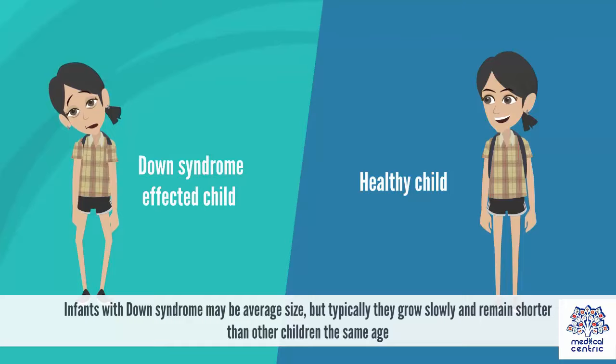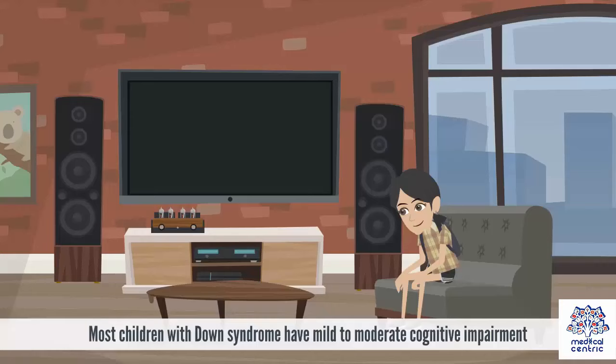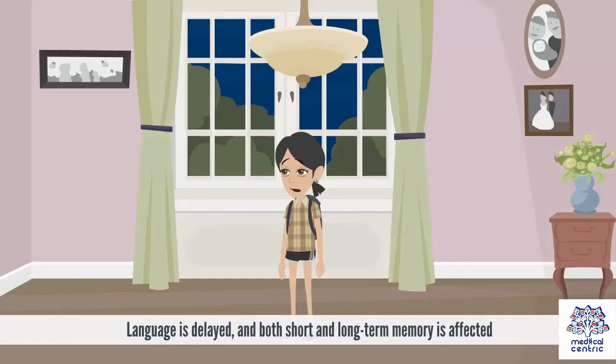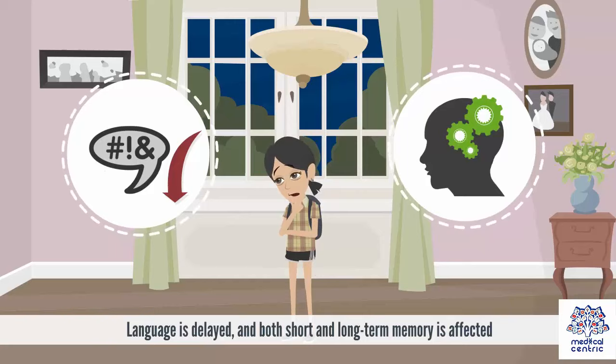Intellectual disabilities: Most children with Down syndrome have mild to moderate cognitive impairment. Language is delayed, and both short and long-term memory is affected.